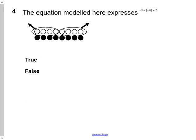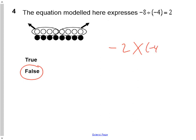Question 4: the equation modeled here expresses negative 8 divided into groups of negative 4 will equal 2 groups. This is actually false. This is actually demonstrating removing two groups of negative 4 is equal to positive 8. It's actually removing two groups of negative 4 that will result in positive 8.